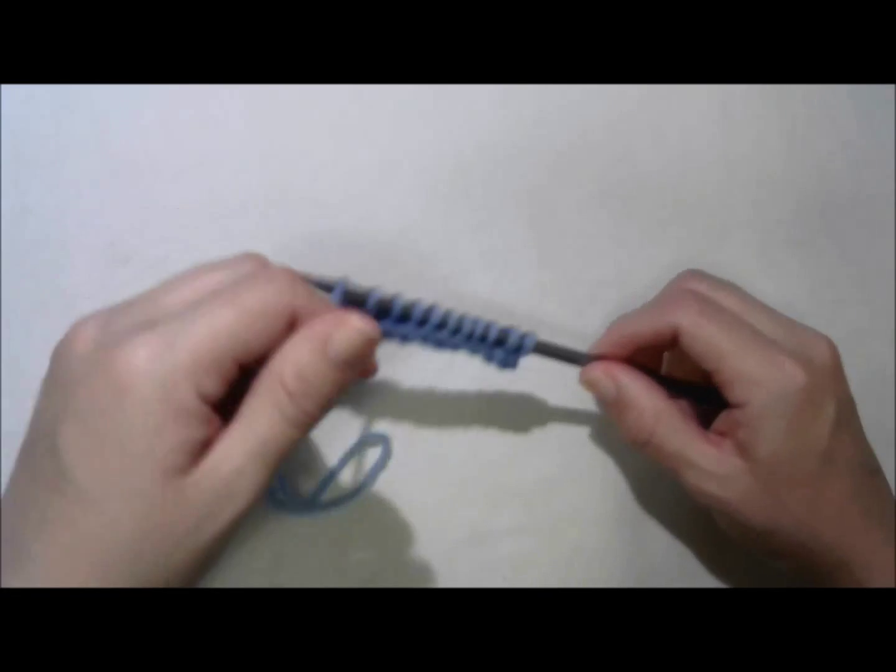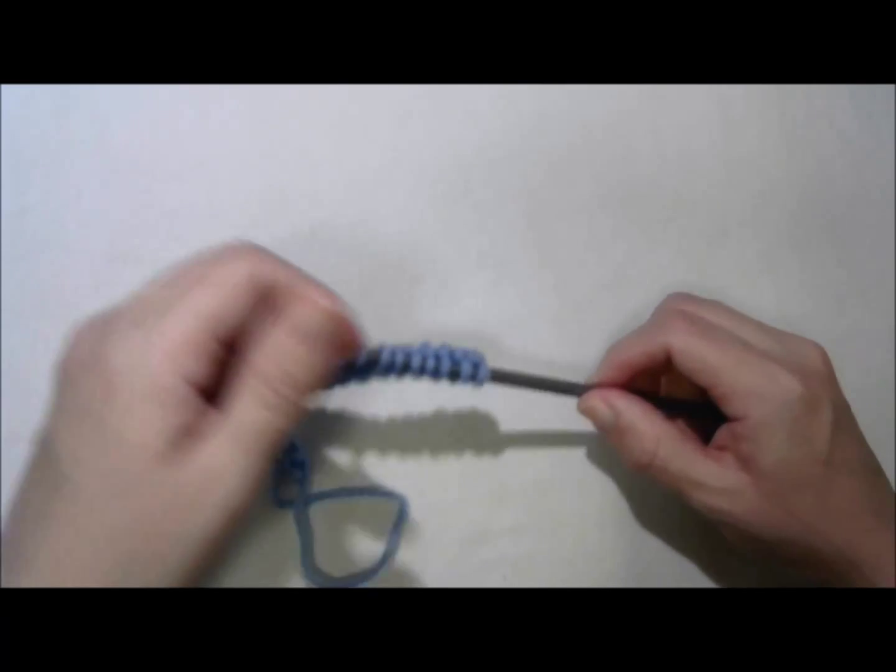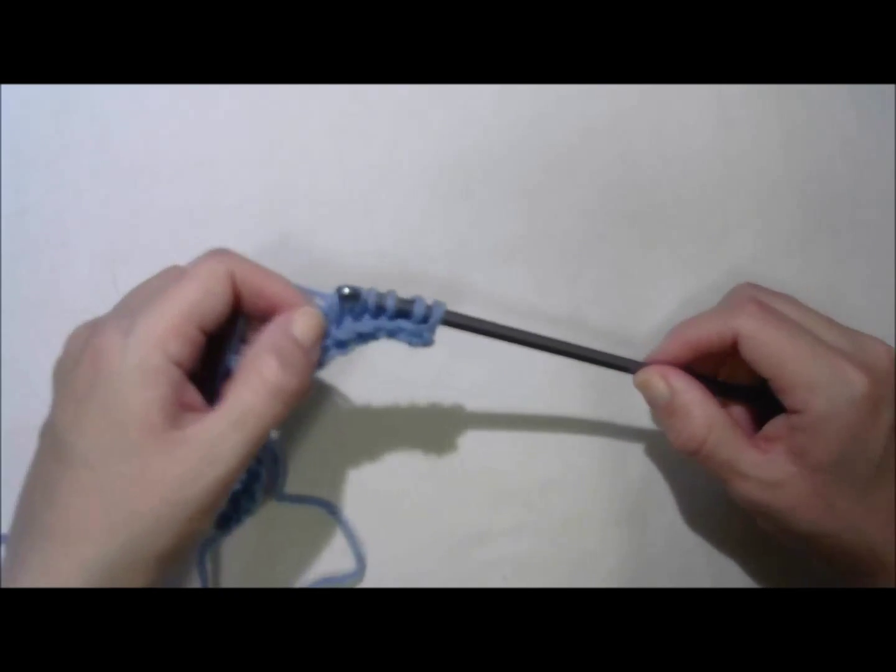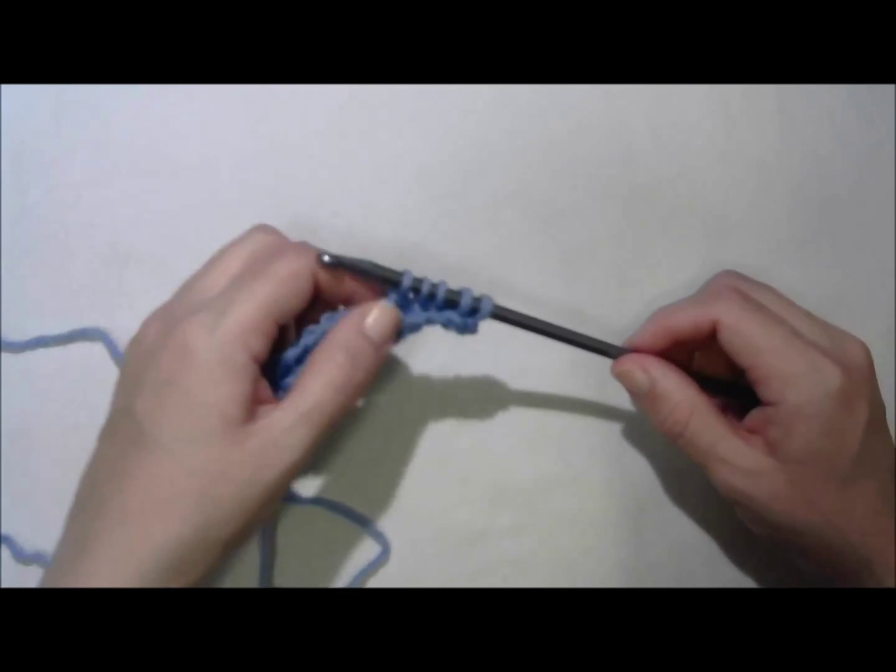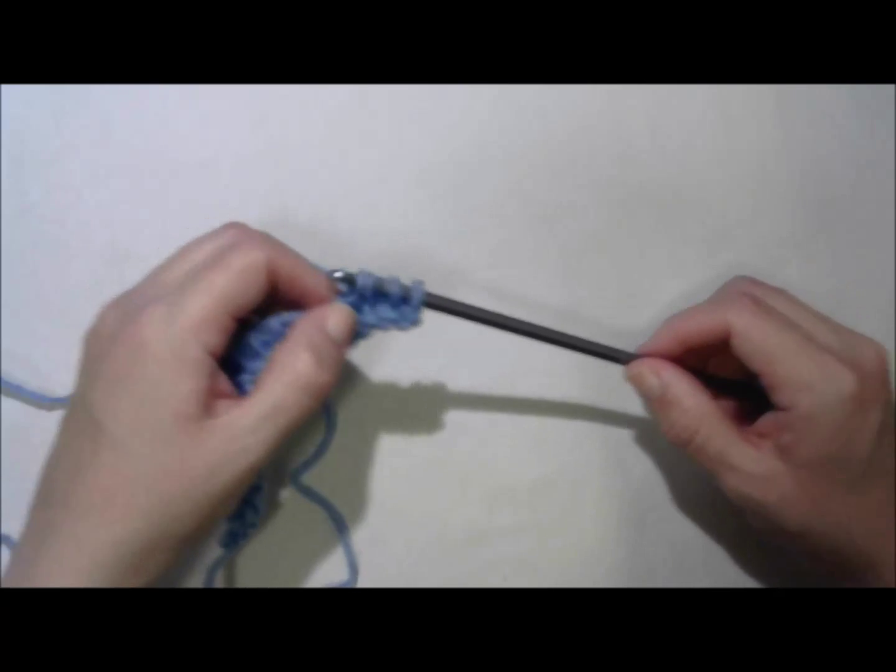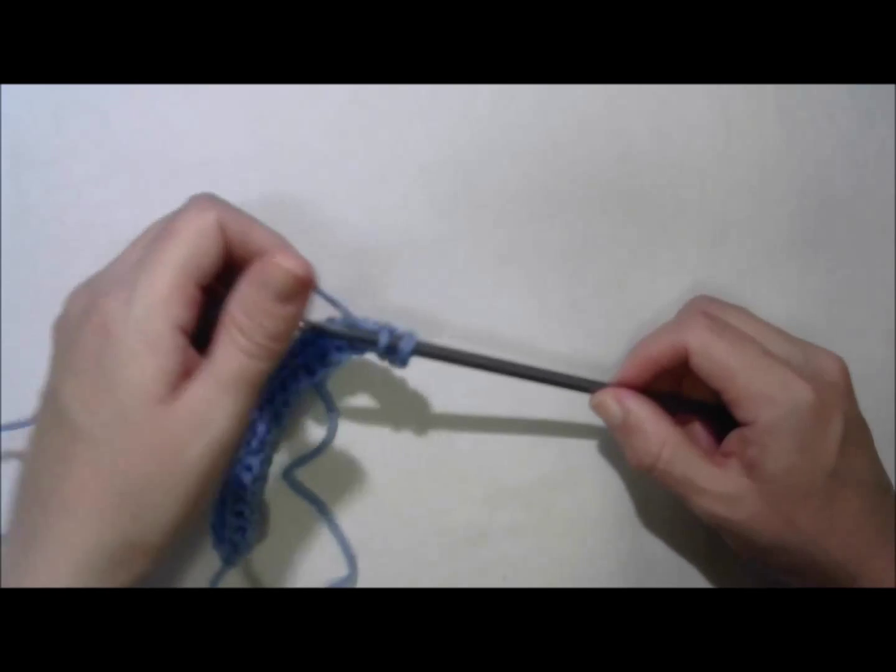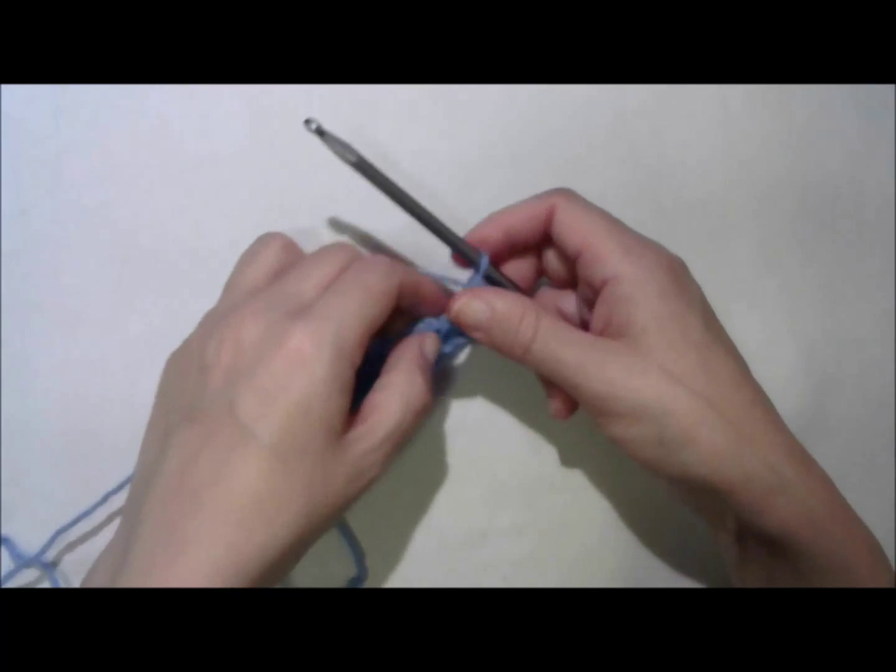All the way back to the other end. This is Tunisian simple stitch. And you repeat this row with a forward pass and a return pass until your piece is long enough. End up with one loop on your hook.